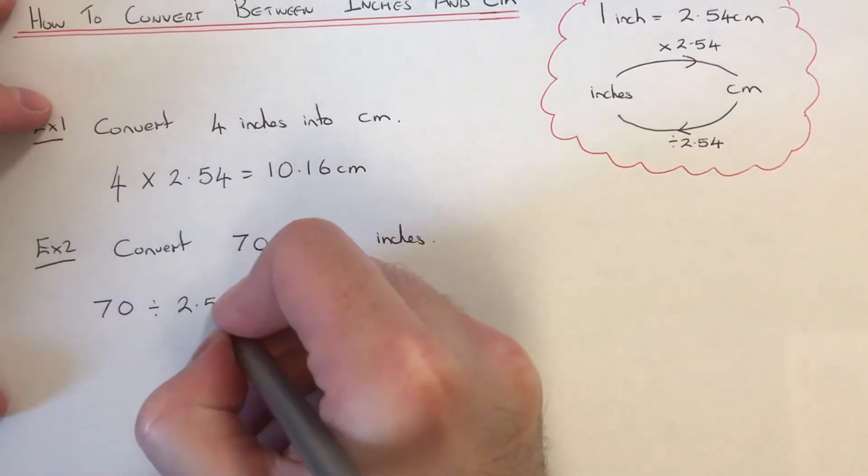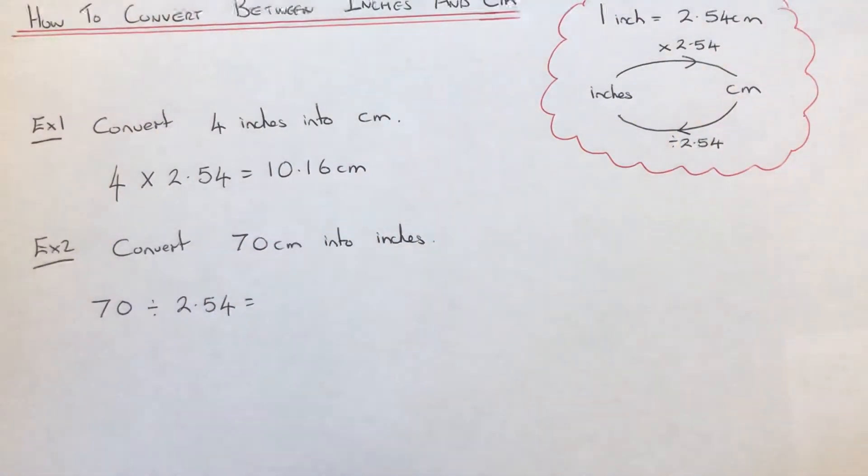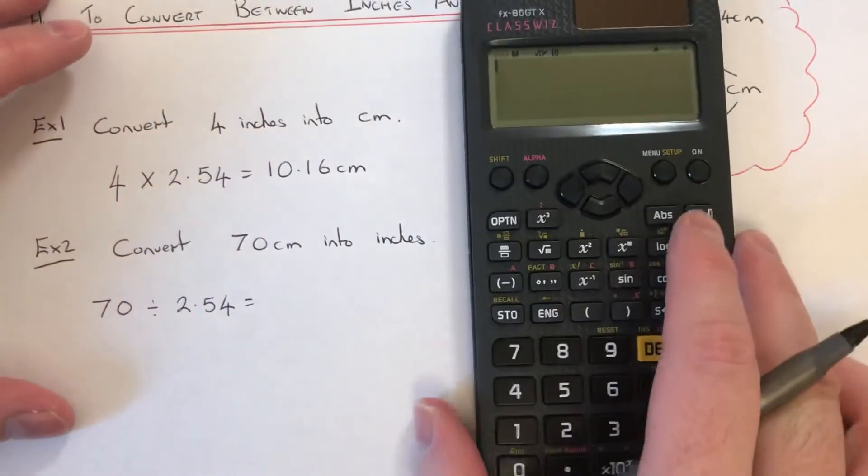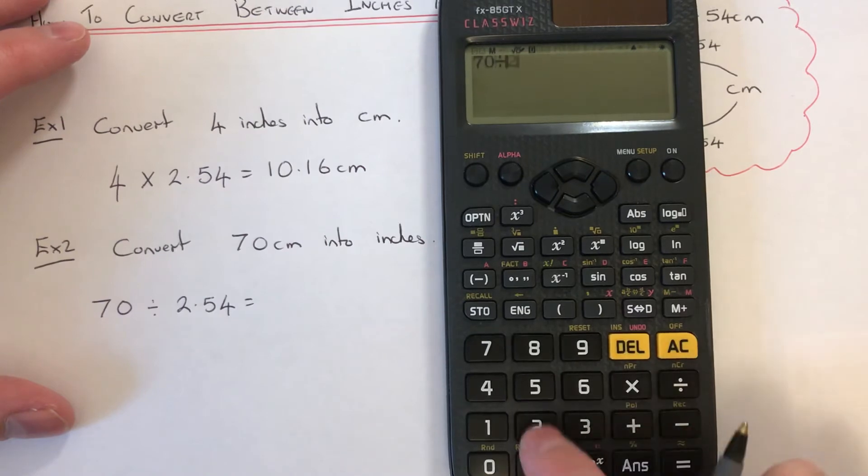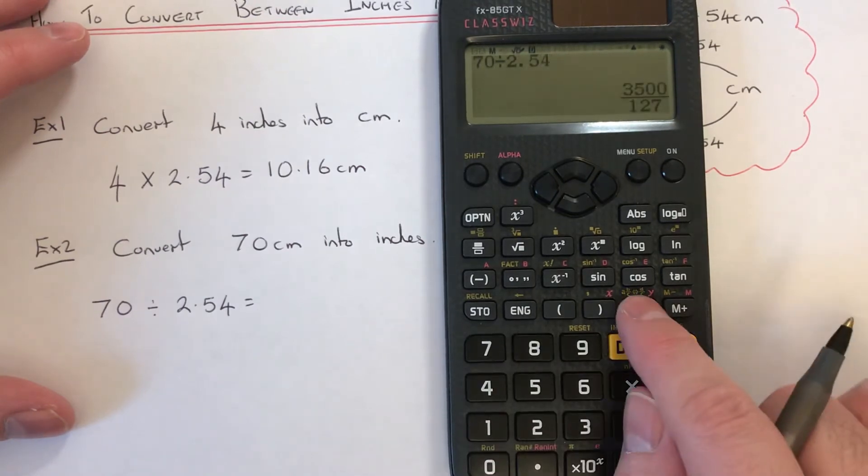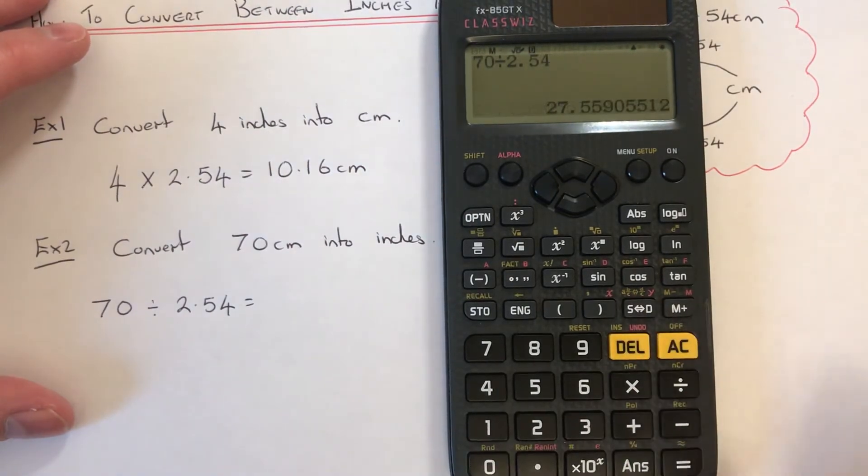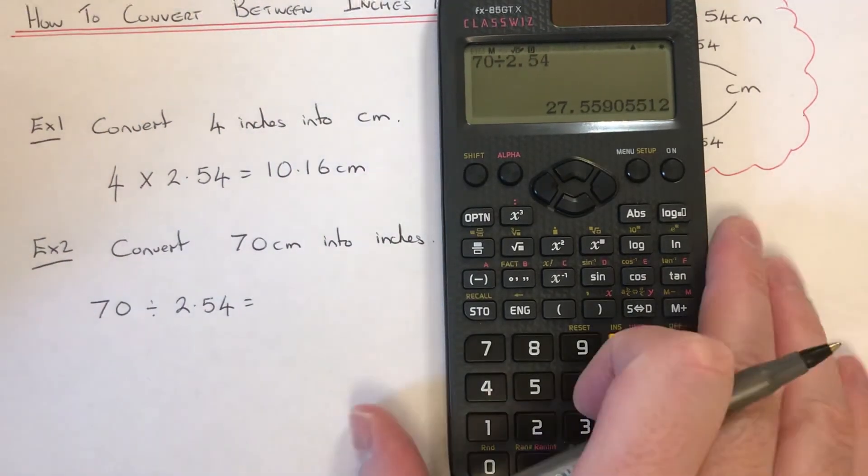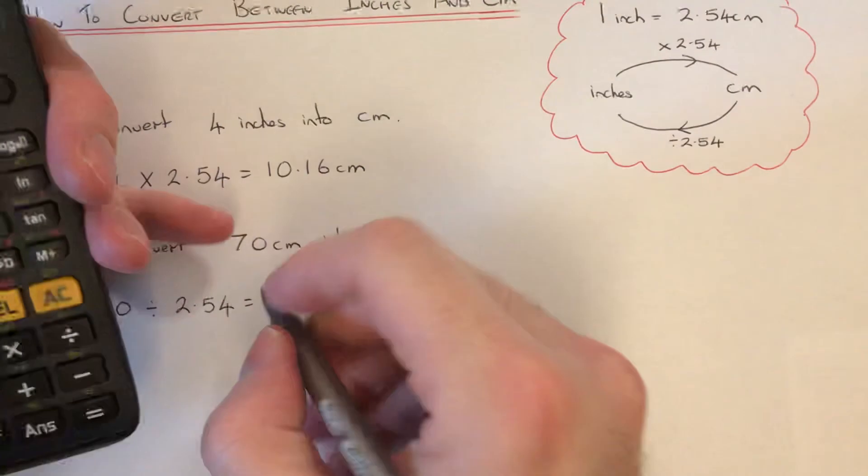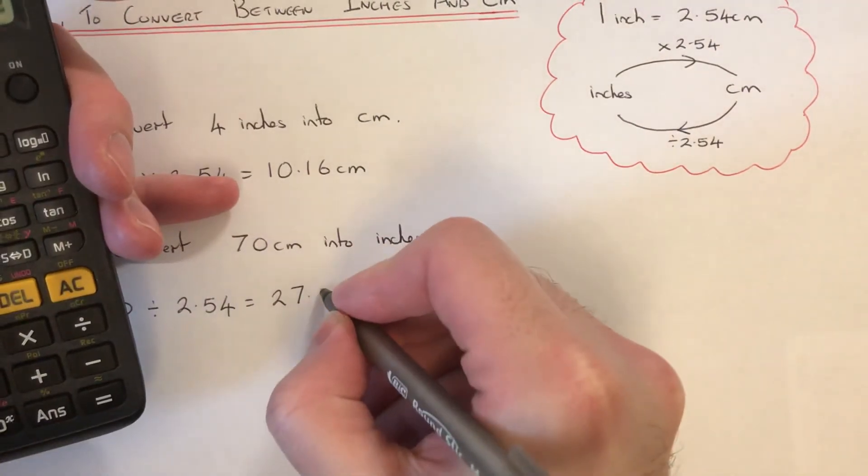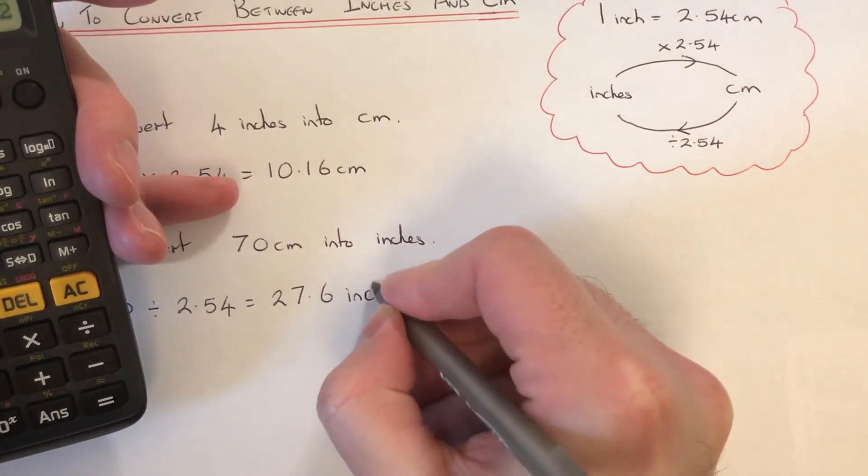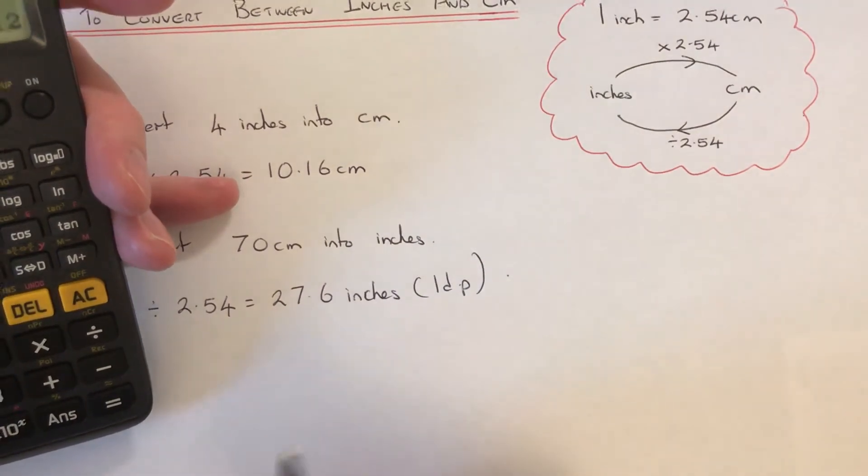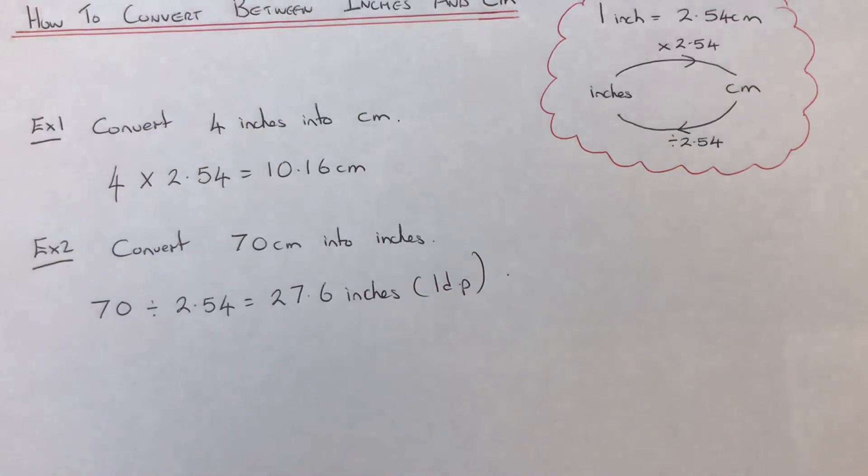Like the first example, you'll need your calculator. So 70 divided by 2.54 gives an answer of 27.6 inches, and that's rounded to one decimal place.